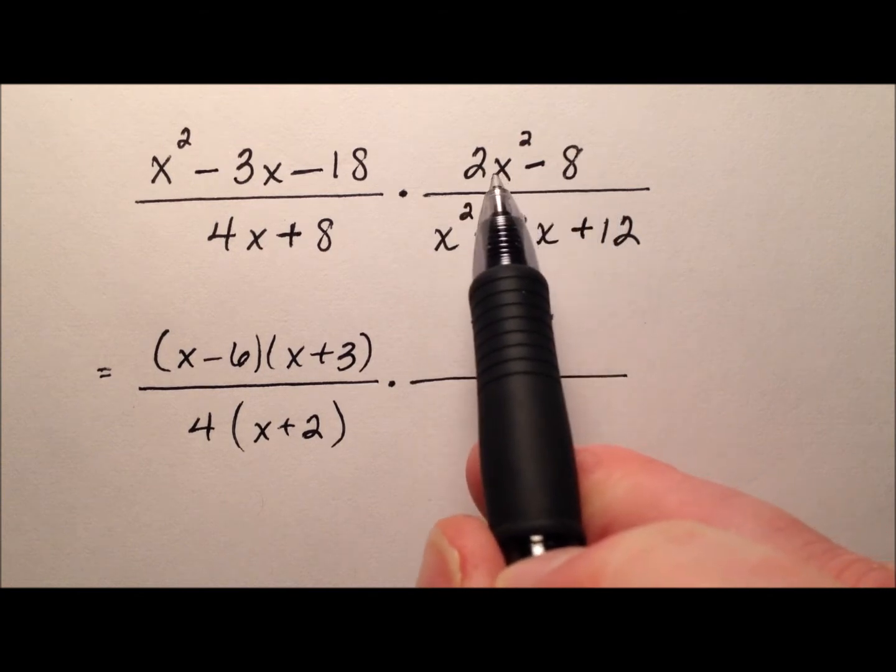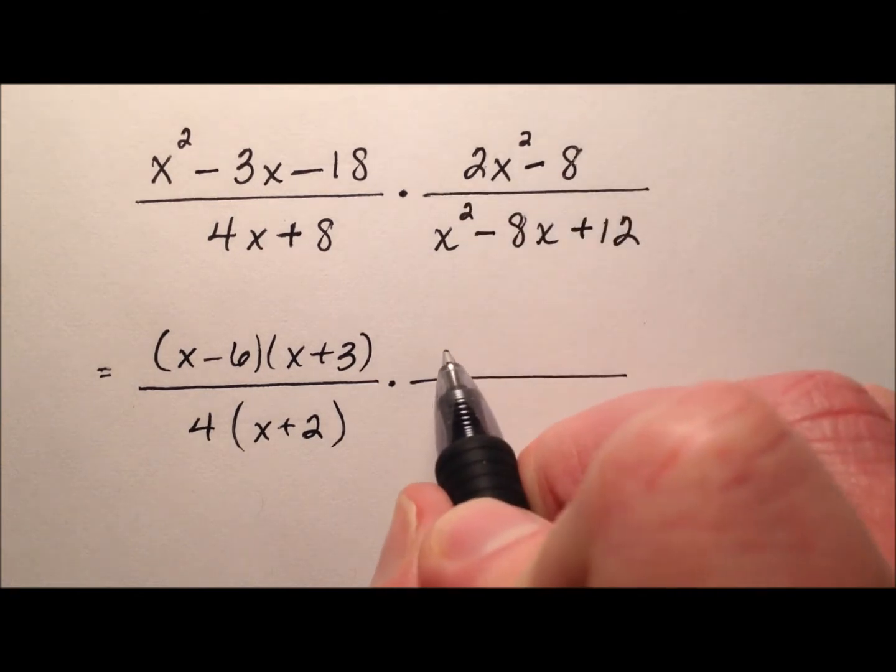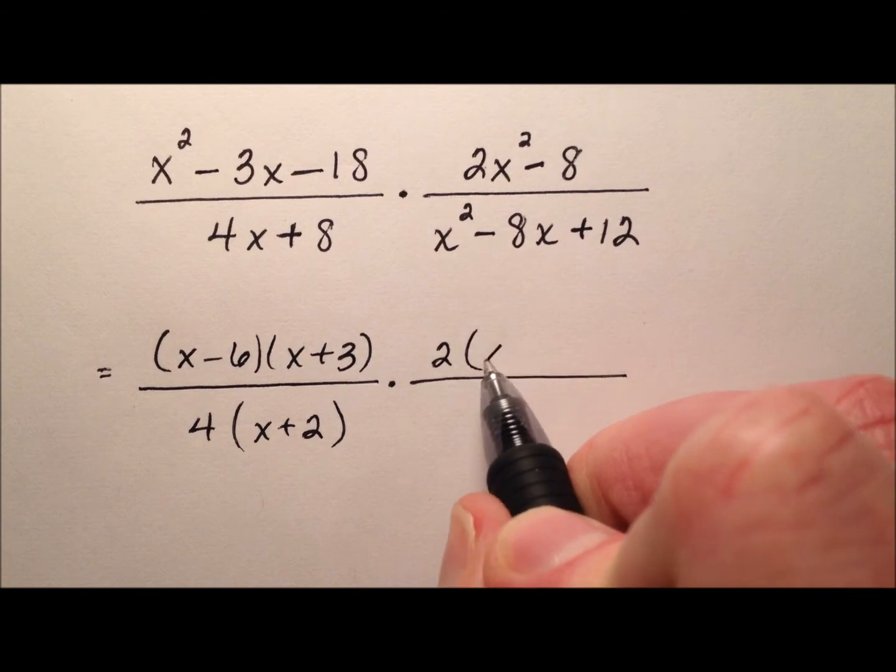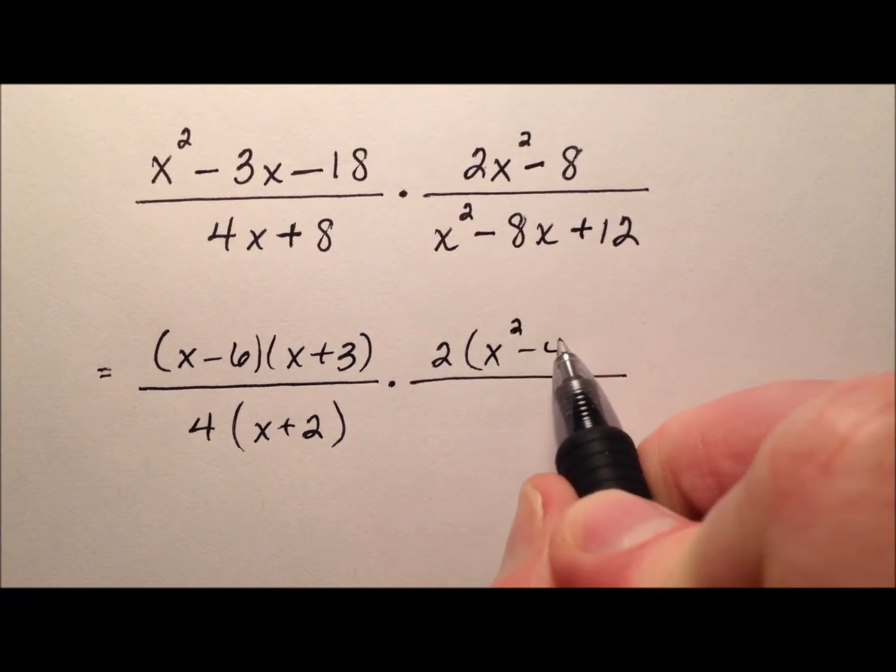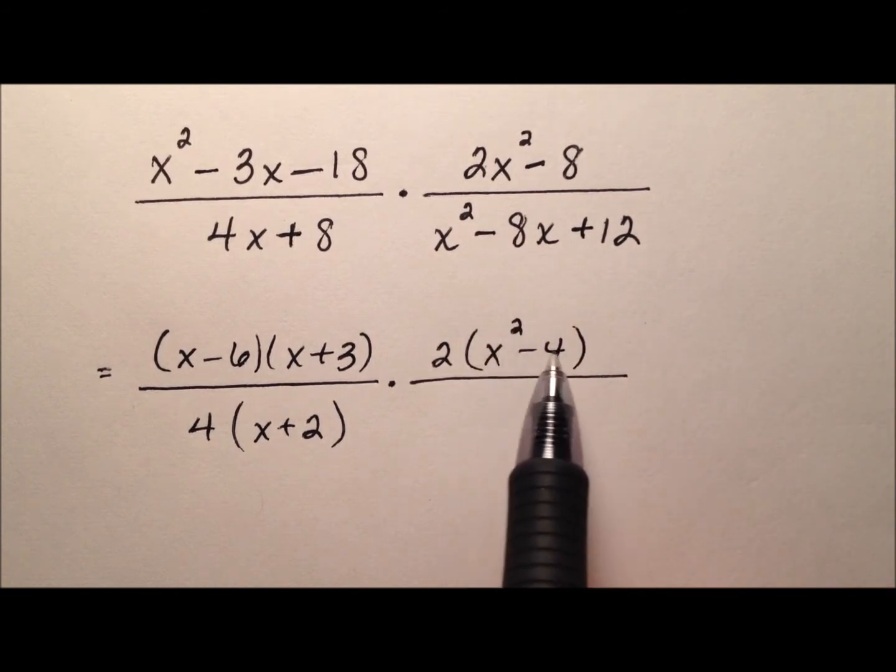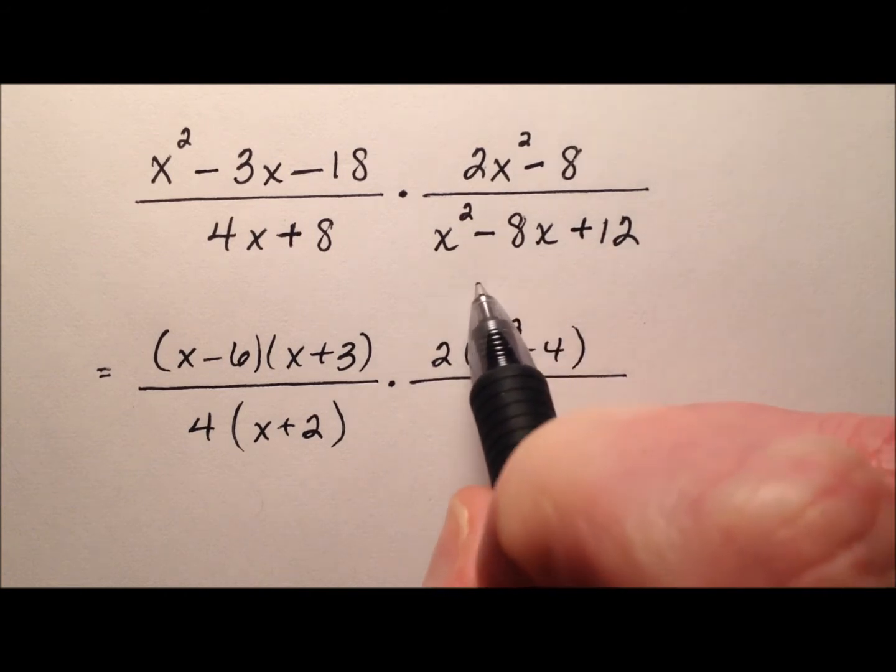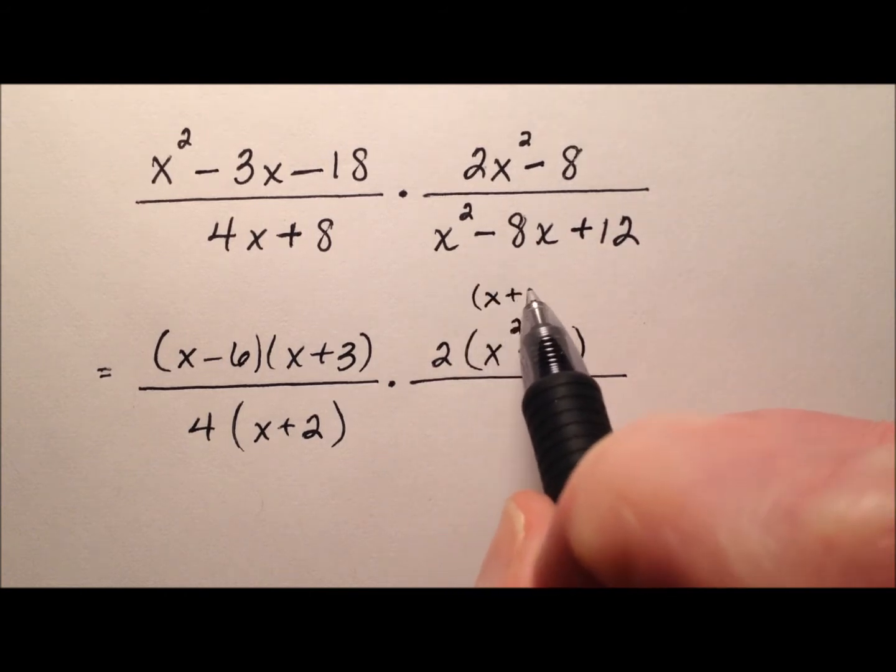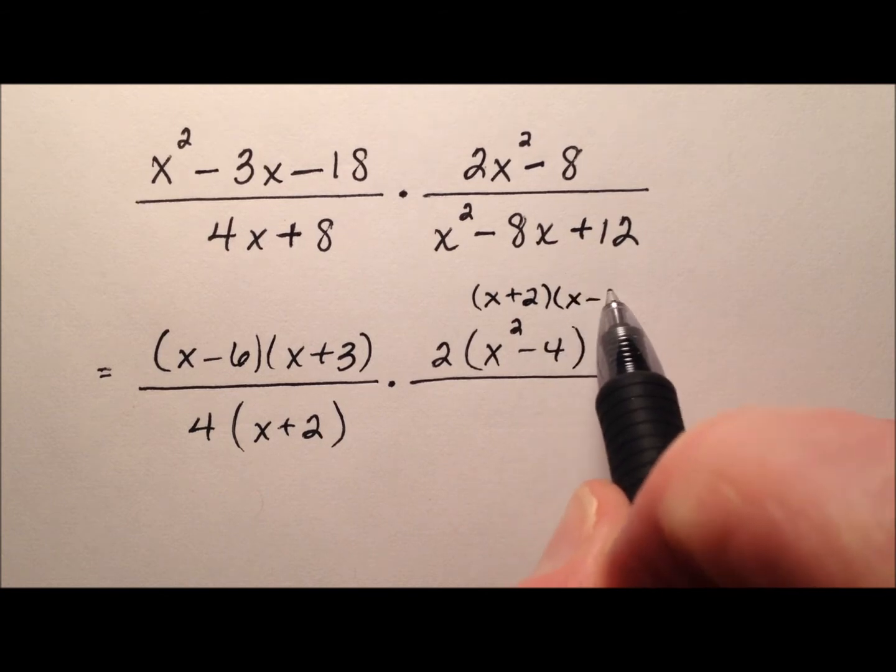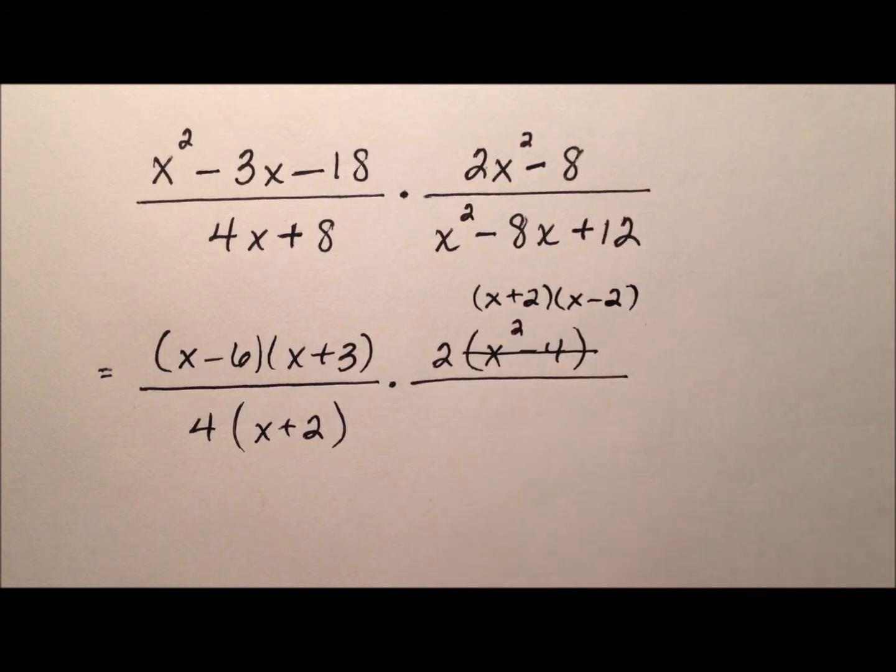Let's look at this next one. The first thing I'm going to do is greatest common factor of 2, and I'm left with x² - 4, which I know is actually difference of squares, right? So that will factor down to (x + 2)(x - 2) for that guy right there.